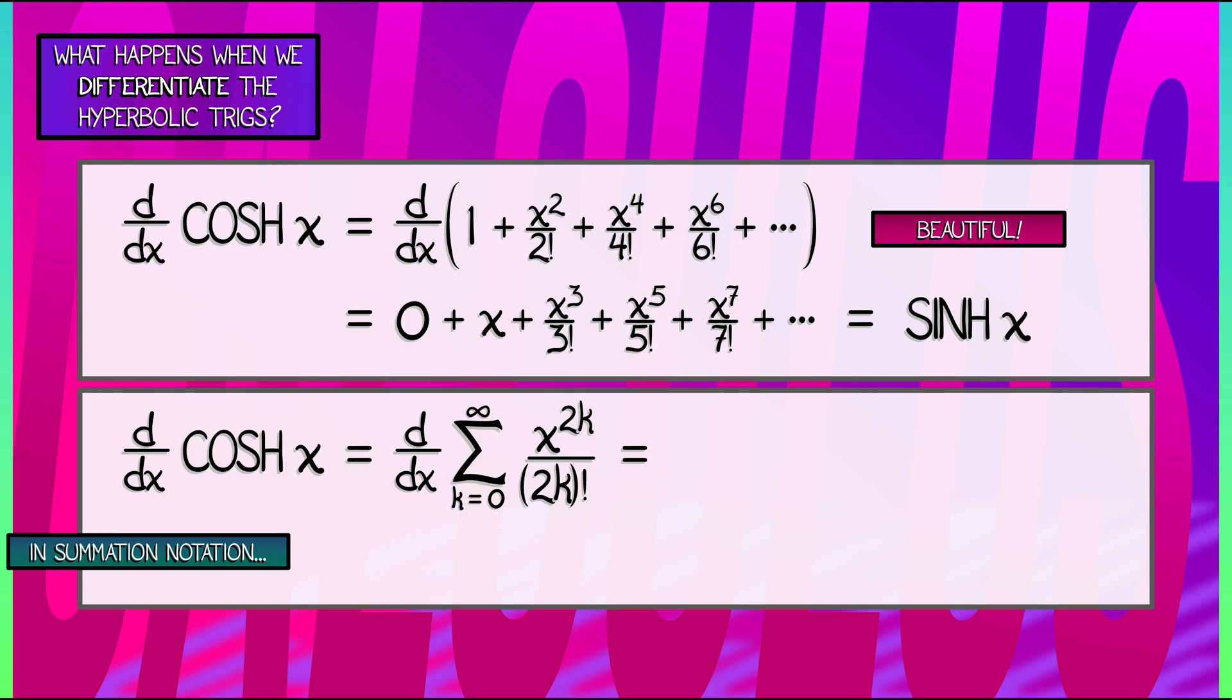That's the sum of 2k times x to the 2k minus 1 divided by quantity 2k factorial. Now, here's where you've got to be careful. Because that sum is not k goes from 0 to infinity.